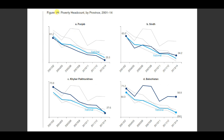In each figure, emphasis has been put on one province by bolding that line — Punjab here, Sindh here, Khyber Pakhtunkhwa here, and Balochistan here. Apart from Balochistan, most provinces show a clear downward trend. Balochistan has seen poverty increase, then decrease, then increase again, and is now slowly decreasing — but poverty rates are much higher than other regions and the national level. In Punjab, poverty levels are lower than the national level and declining very smoothly.